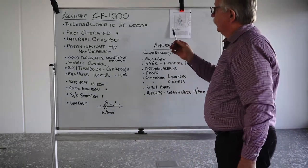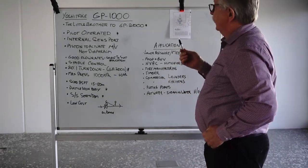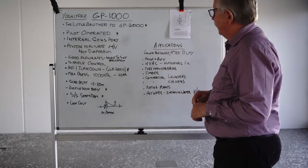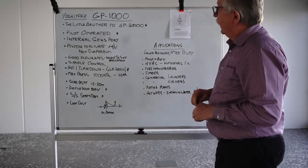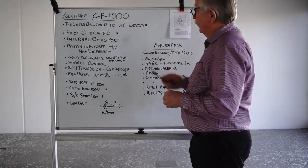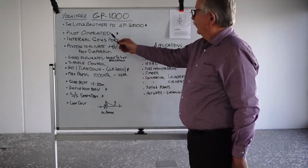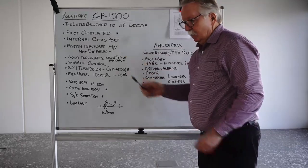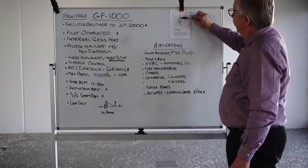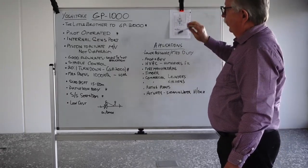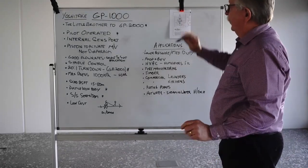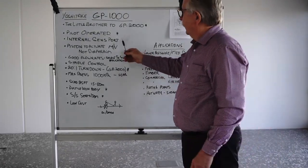So here we'll just look at some of the features of the GP1000. As I said before I call it the little brother to the GP2000. Some of the similarities and differences I'll try and point out here. Number one, it's pilot operated. So it has a pilot valve in its setup to control the amount of steam going to the piston, which I'll talk about in a minute.